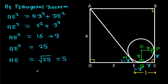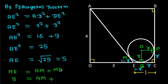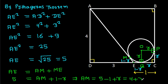And we have AE equal to AM plus ME. Since ME is 1 minus R, AM will be 5 minus (1 minus R), that is 5 minus 1 plus R. That will be 4 plus R. So AM is 4 plus R.